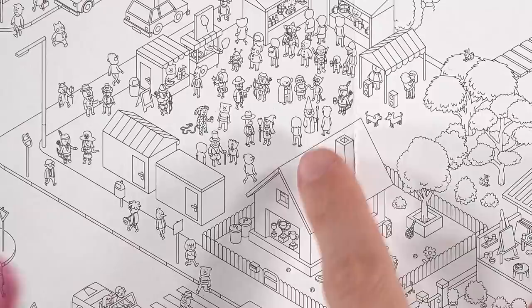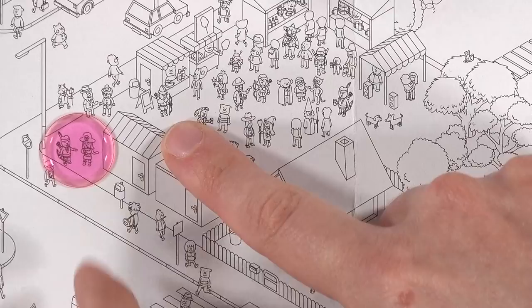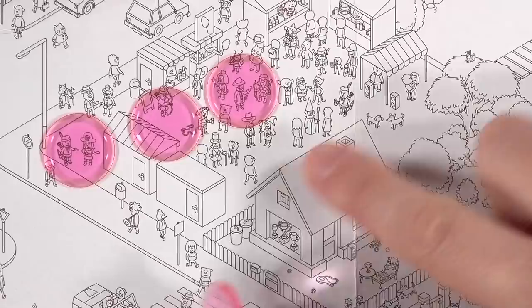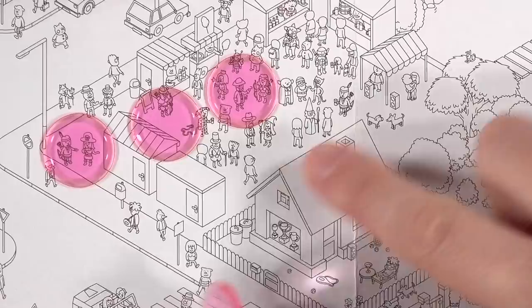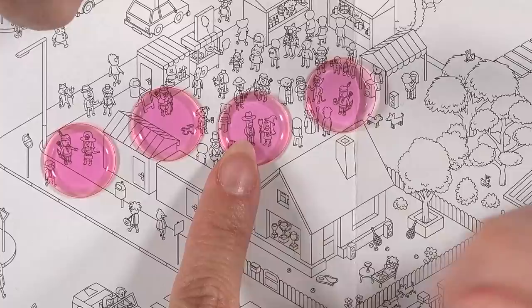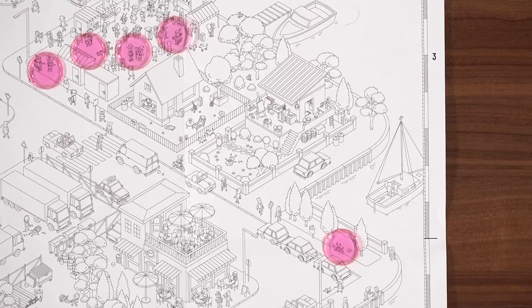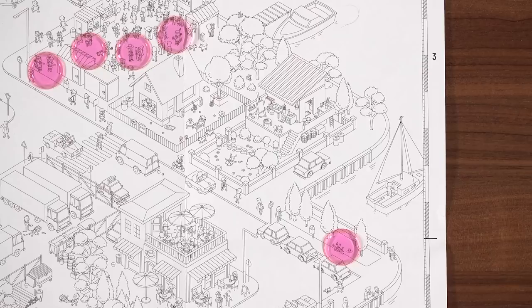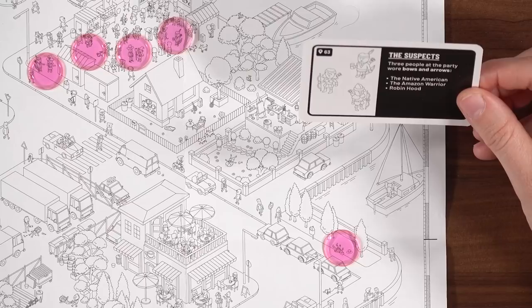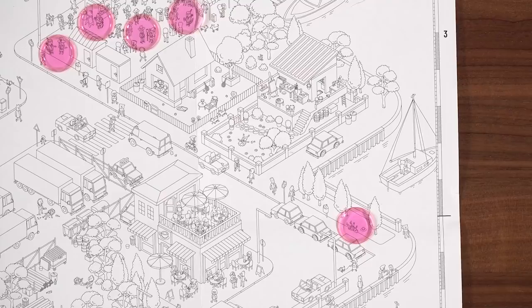The cowboy was further up the street at a costume party before his death. Are there any suspects? Three people: the Native American, the Amazon Warrior, and Robin Hood. What job does Robin Hood have in real life? The card says to also determine what jobs all three suspects have in real life. Our world is going to expand a little - this is a five-star case, so it'll get bigger. We'll use different colors for each suspect.